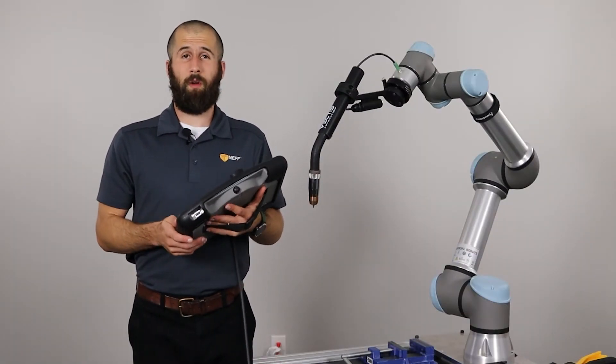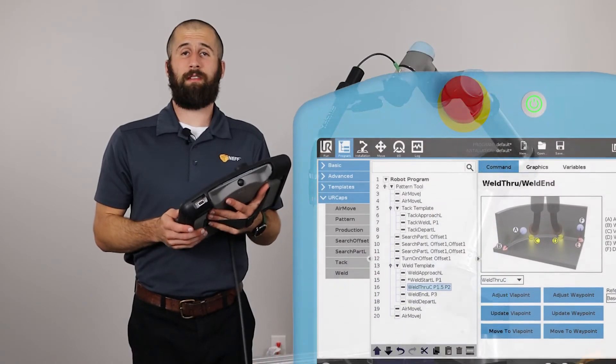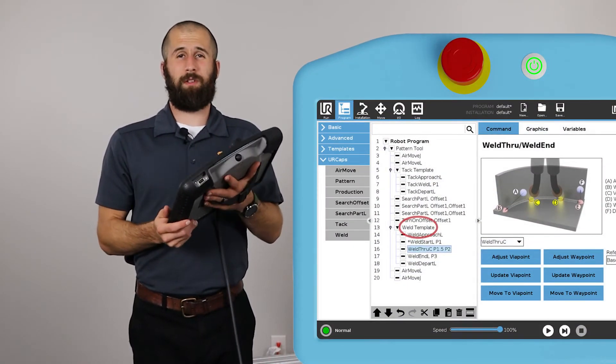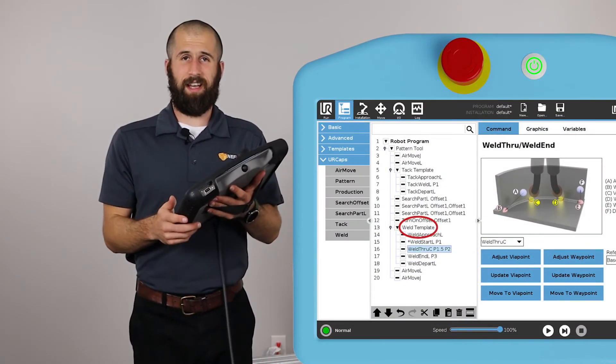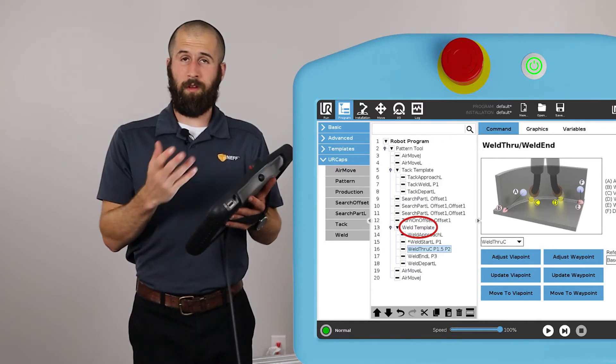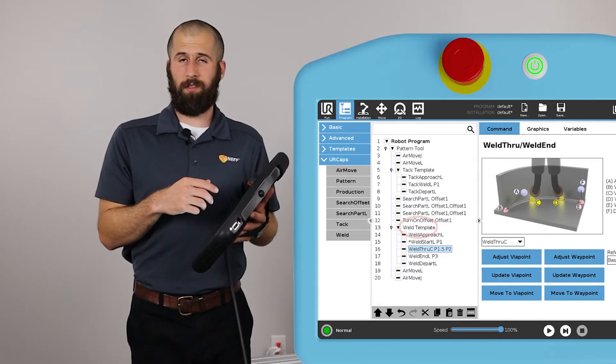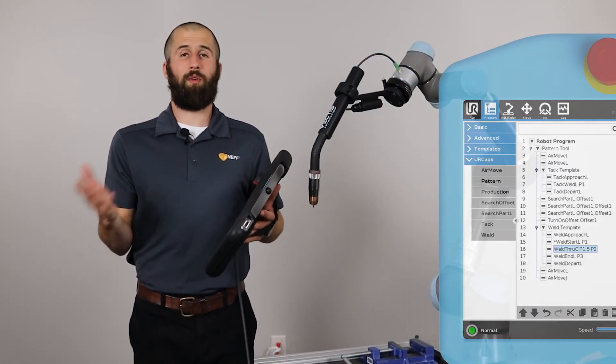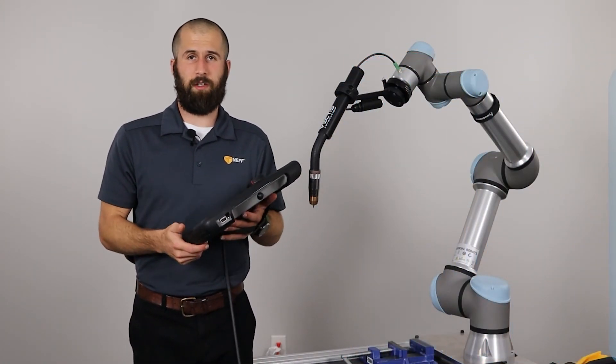Once you're ready to start programming, you're going to select the weld template node from the UR CAPS node selection on the left hand side of the polyscope. Here you're going to teach the starting point of the weld and the ending point of the weld. This is going to use the weld that you previously configured in the installation file.